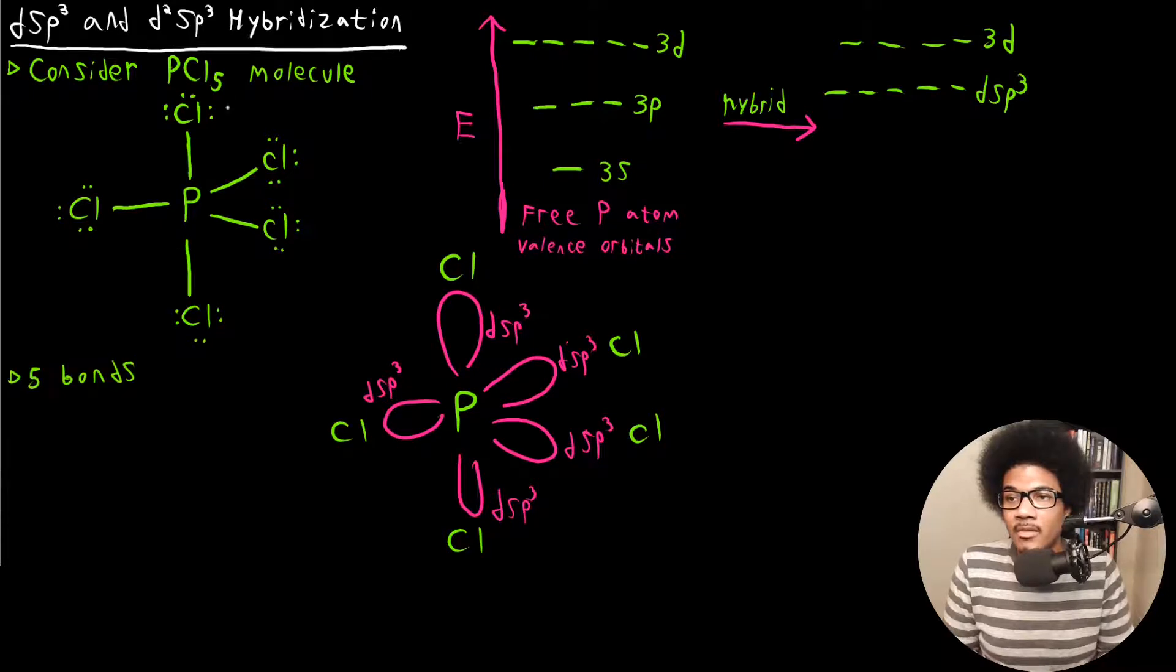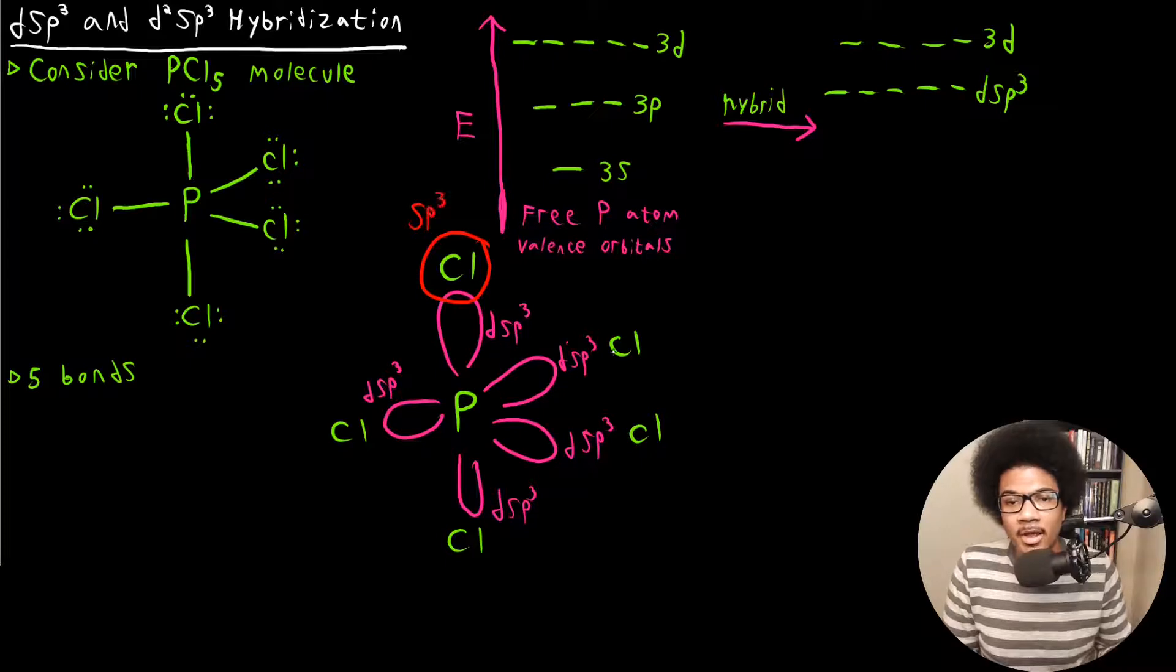So each of these lone pairs is going to require an orbital as well. So chlorine is actually going to be SP3 hybridized since it needs four orbitals: one to accommodate the bond, but also three to accommodate lone pairs. So this chlorine is going to be SP3 hybridized. You're going to have interactions with chlorine SP3 orbitals.